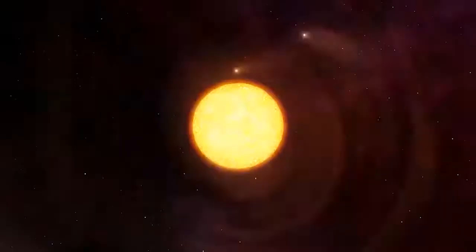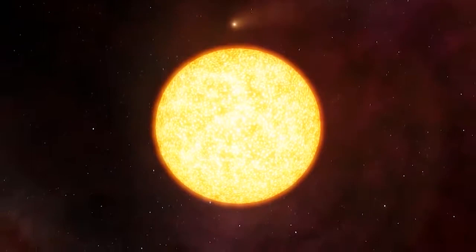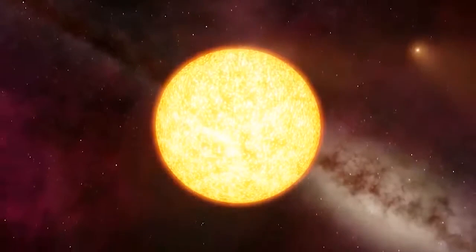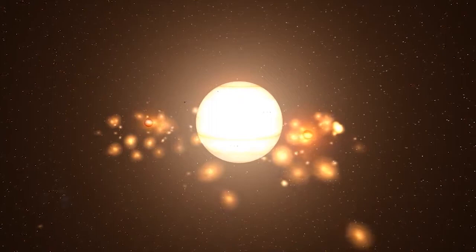This object is known as a protostar. The process in which it was formed is known as stellar ignition. After forming, the new protostar continues to collect dust and gas from the cloud it was formed in. The star is mostly made of hydrogen and a bit of helium right now. This is the first stage of the star's evolution.